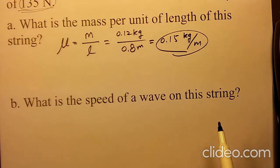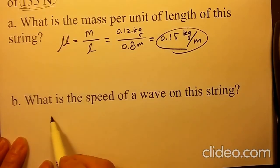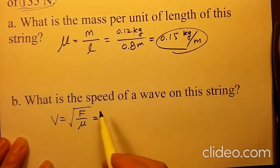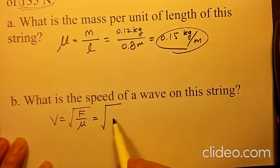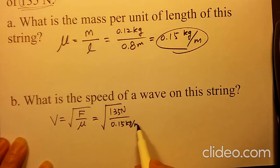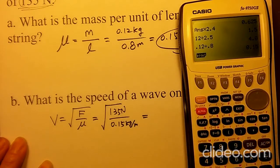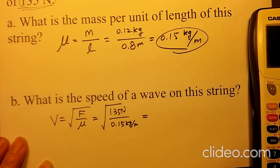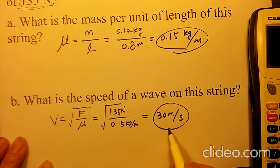The second part asks: what is the speed of the wave on the string? You need the equation V equals the square root of tension F over mu. Your tension is 135 newtons over your mu of 0.15 kilograms per meter. The square root of 135 divided by 0.15, which is the square root of 900, becomes 30 meters per second as your velocity of the wave on this string.